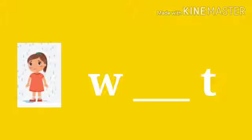Now see, what picture is this? This is wet. W-T. Now what letter is missing over here? Yes, E is missing over here. W-E-T. Wet.